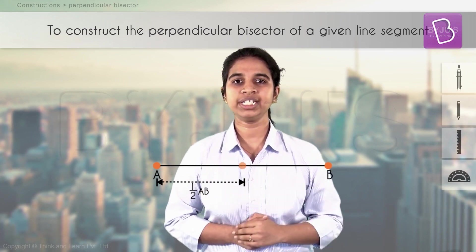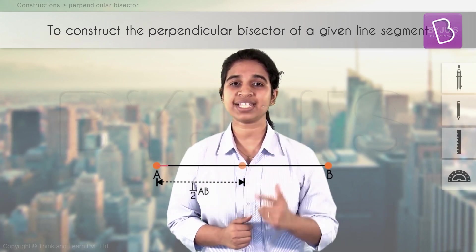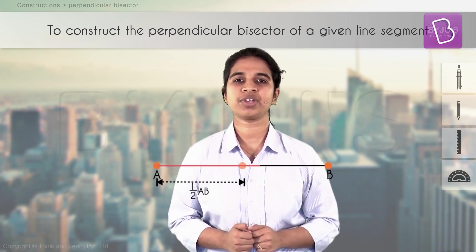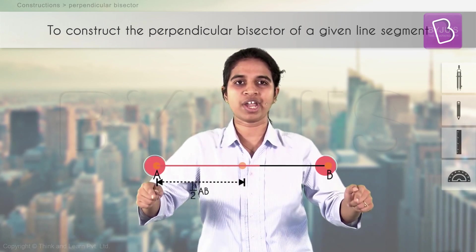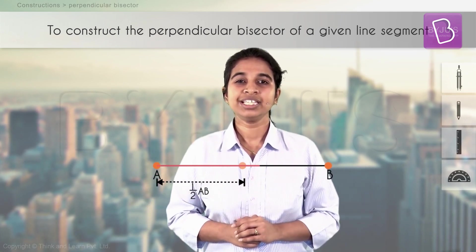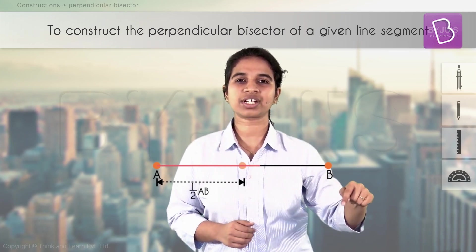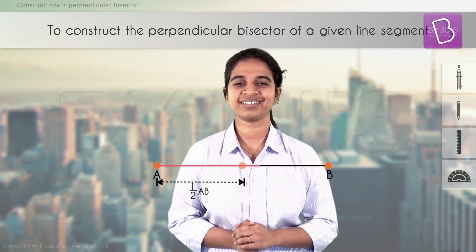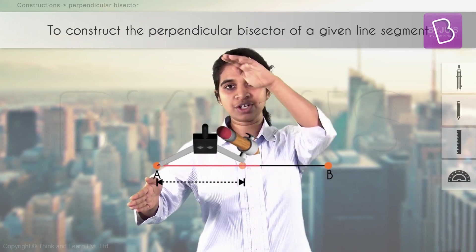We need the arcs to intersect — only then we'll get the point from which we draw the perpendicular bisector. Hence, the distance always needs to be more than half of AB. The logic is simply because the sum of two sides of a triangle has to be greater than the third side — that's the logic behind this.